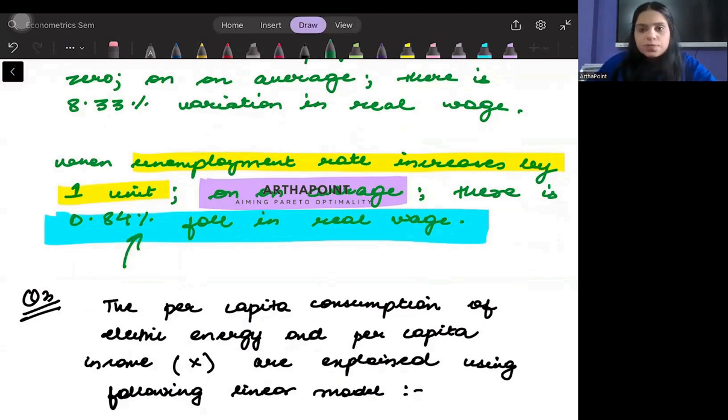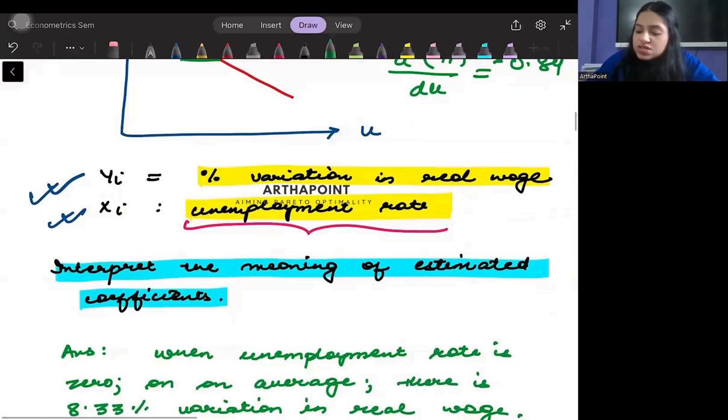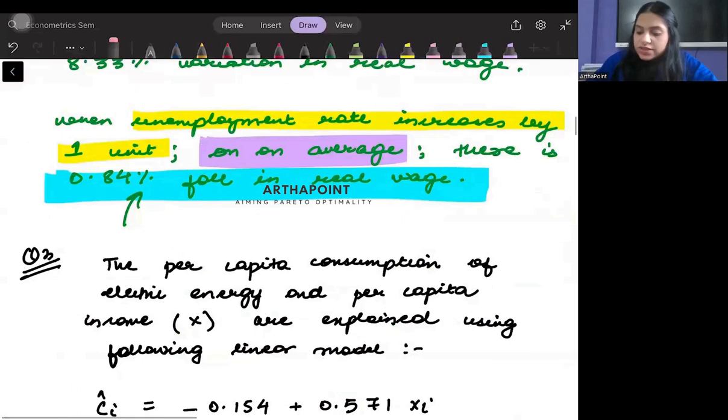Why am I using percentage? This is a simple linear model—I'm using percentage because it is given that this is measured in percentage.